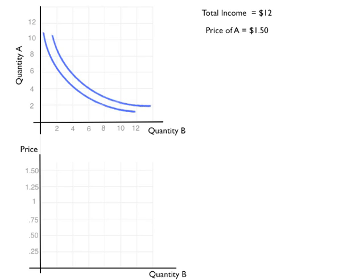Here, total income is $12. Price of A is $1.50. Price of B is $1.50. The budget line is in red. The indifference curves are in blue.